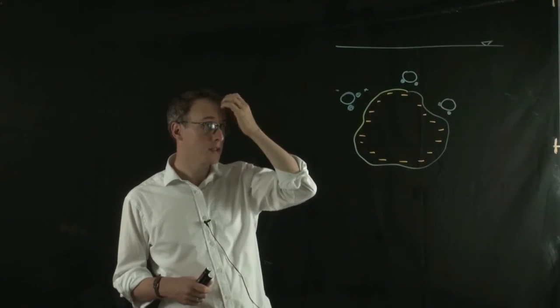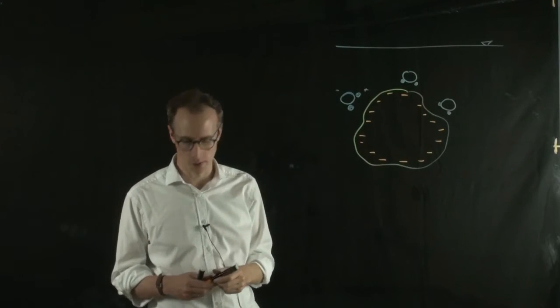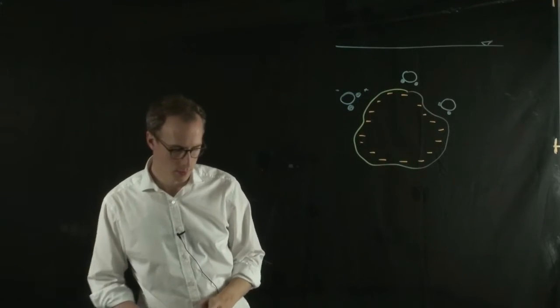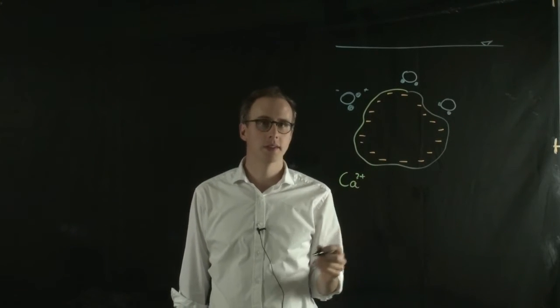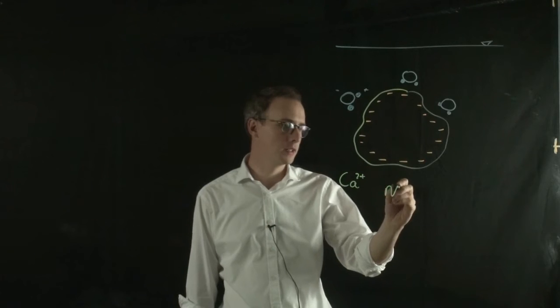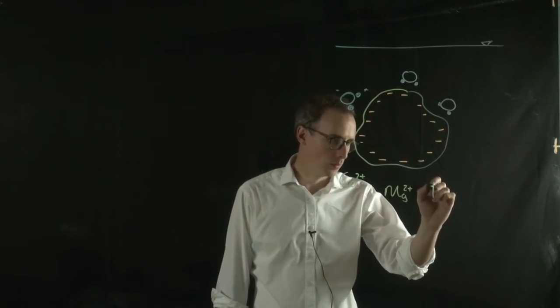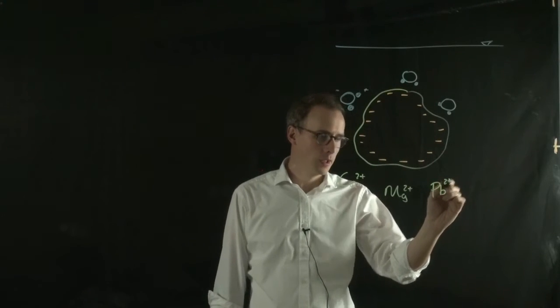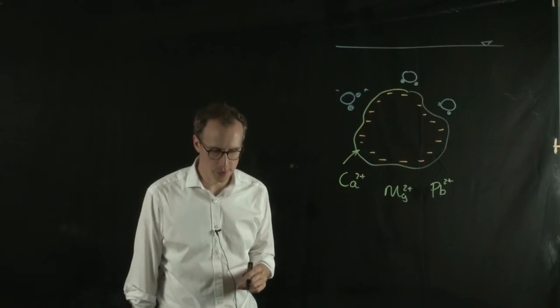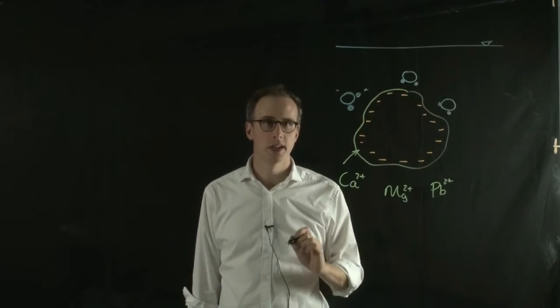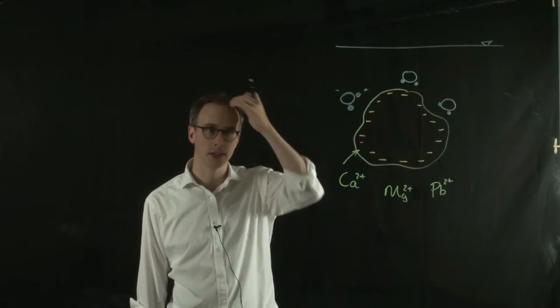You can also get cations attracted to the surface of the particle, things like calcium 2-plus atoms within solution, magnesium 2-plus, and lead 2-plus. And those can be attracted and absorb onto the surface of the clay particle, onto the exchange sites—the sites with the highest negative charge.